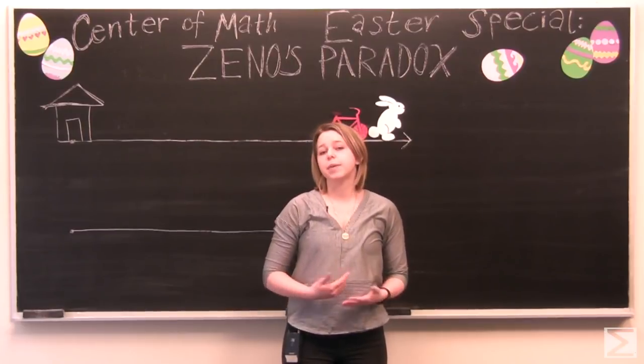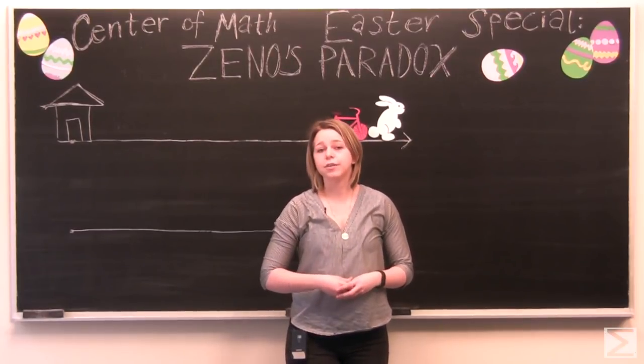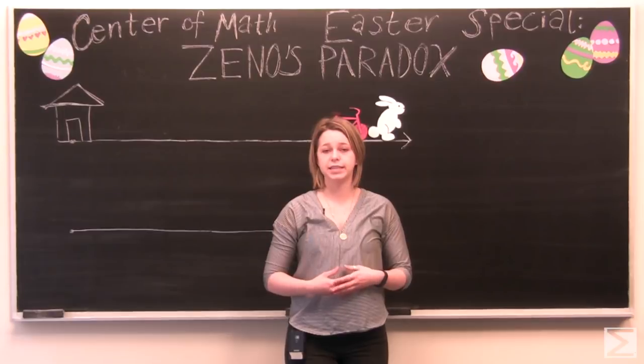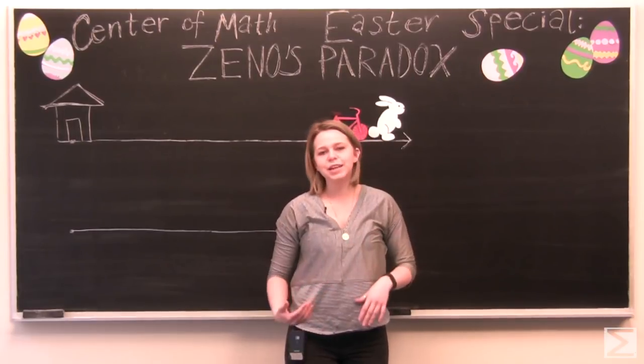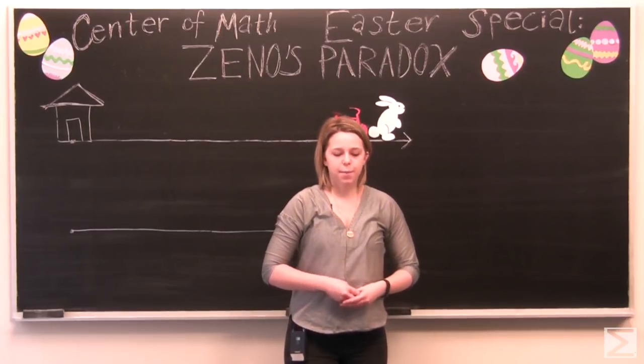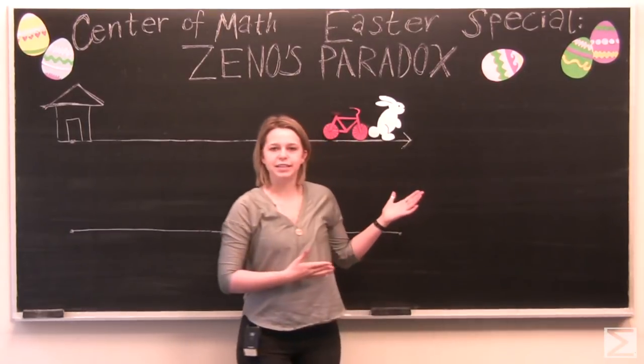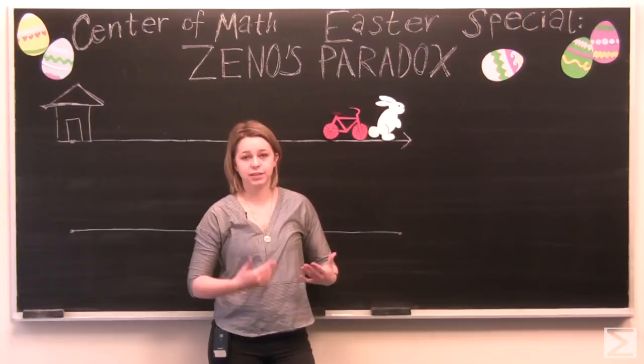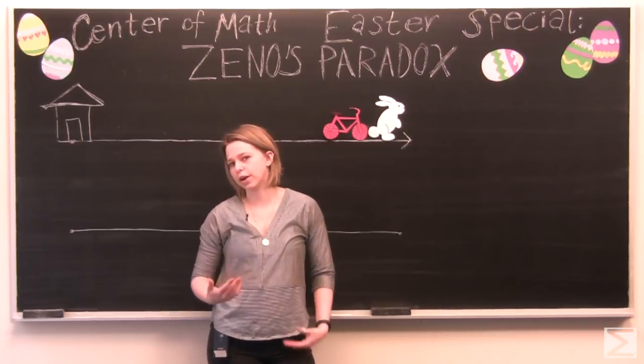These are a collection of paradoxes by a Greek philosopher in the 5th century BC. And they have perplexed mathematicians and some scientists for centuries. But we can explain this by using another one of Zeno's paradoxes and pointing out where its flaws are.